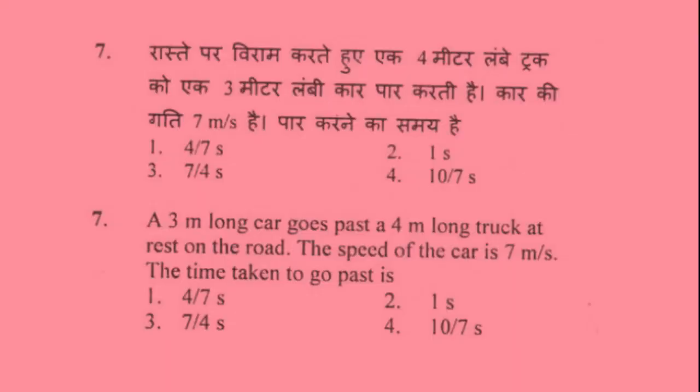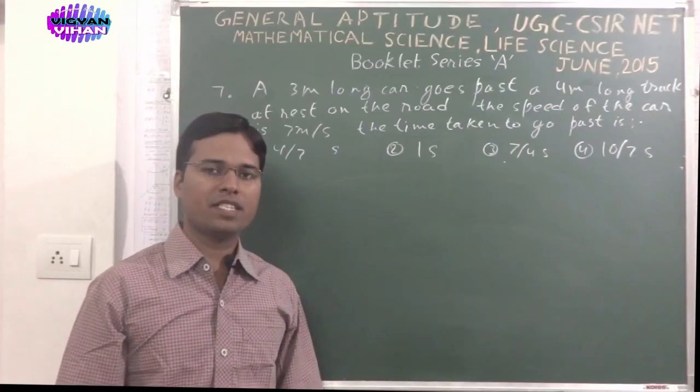Seventh problem: A 3 meter long car goes past a 4 meter long truck at rest on the road. The speed of the car is 7 meter per second. The time taken to go past is: option 1, 4 by 7 second; option 2, 1 second; option 3, 7 by 4 second; option 4, 10 by 7 second.